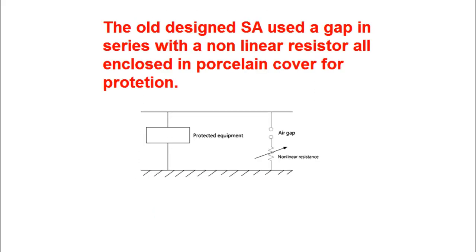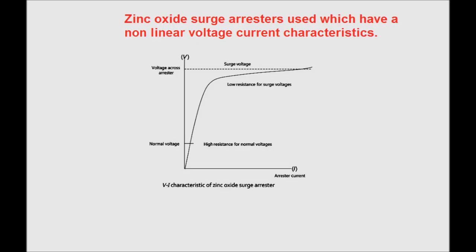The old designed surge arrester used a gap in series with a non-linear resistor, all enclosed in a porcelain cover for protection. The diagram shows the old type of surge arrester used in earlier days. The non-linear resistance provides high impedance during normal operating voltage, but when high voltage or any transient surge occurs, this non-linear resistance provides a low impedance path, and therefore sparkover occurs in the spark gap, thereby protecting the equipment from the surge.